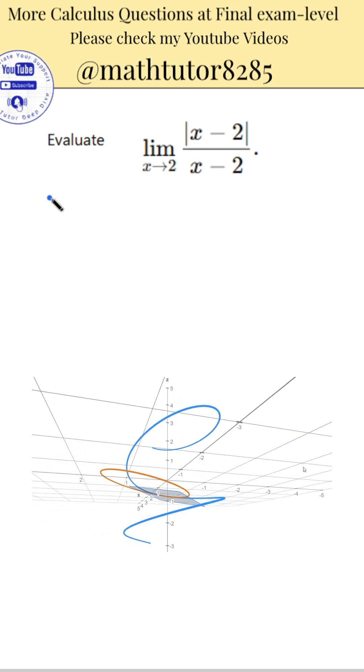Let the function f of x be defined as the absolute value of x minus 2 divided by x minus 2. What is the limit of f of x as x approaches 2? Provide justification using one-sided limits.